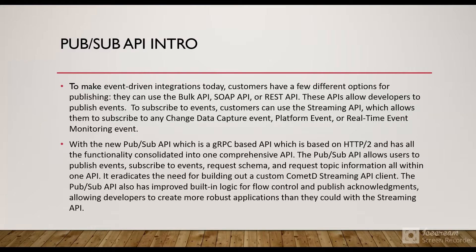To make event-driven integrations today, customers have different options for publishing — they can use Bulk API, SOAP API, or REST API. These APIs allow developers to publish events. For subscribing to events, customers can use the Streaming API, which allows them to subscribe to any change data capture event, platform event, or any real-time monitoring event. The Streaming API is based on the Bayeux protocol, requiring a custom Streaming API client. But with the new PubSub API, which is a gRPC-based API built on HTTP2, all functionality is consolidated into one comprehensive API.